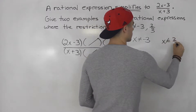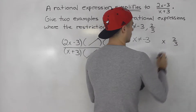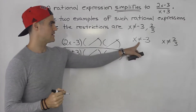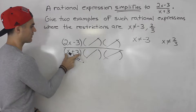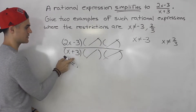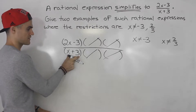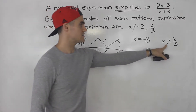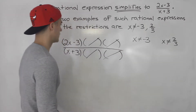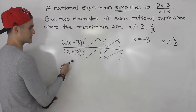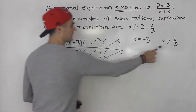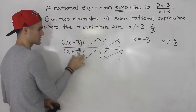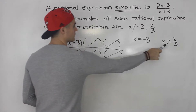After you factor and all the common brackets crossed out, it simplified to 2x minus 3 over x plus 3. Now, x cannot equal negative 3 is already taken care of in the simplified expression, because we can clearly see x cannot equal negative 3 due to this factor in the denominator. Restrictions always come from factors in the denominator.